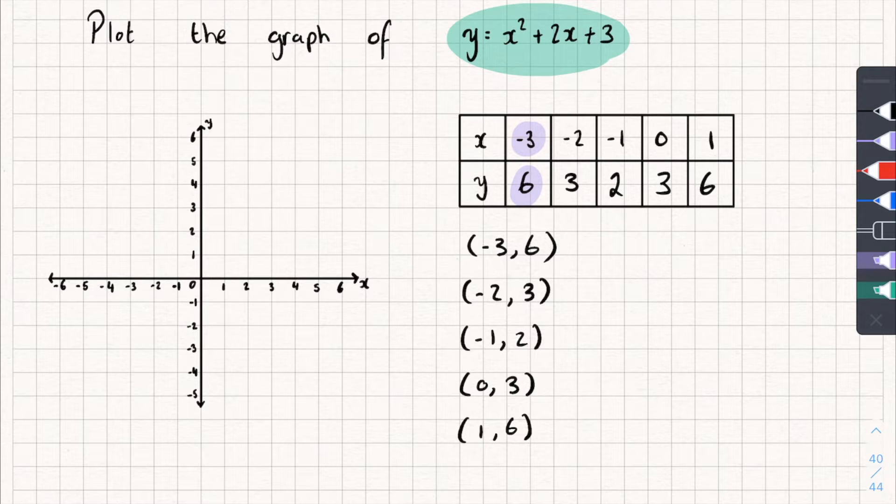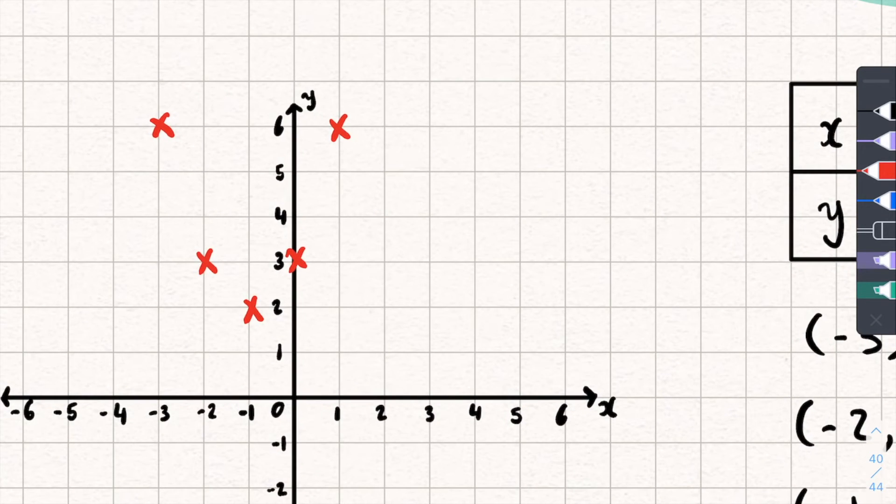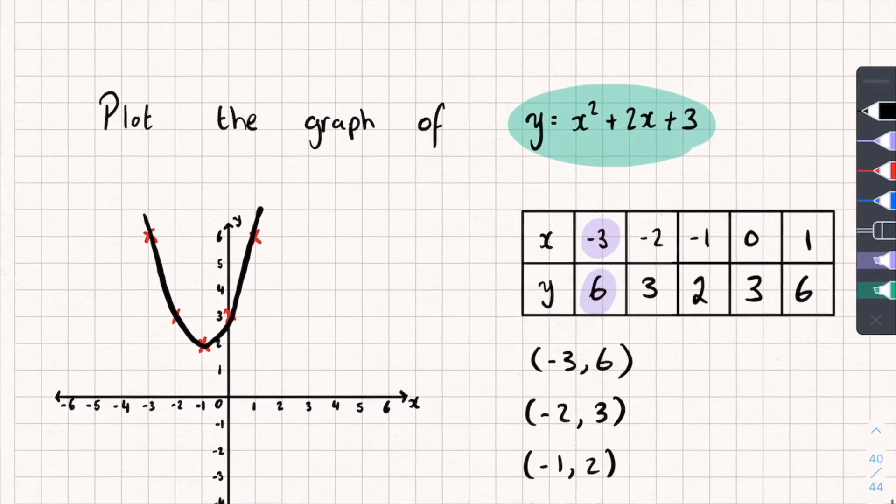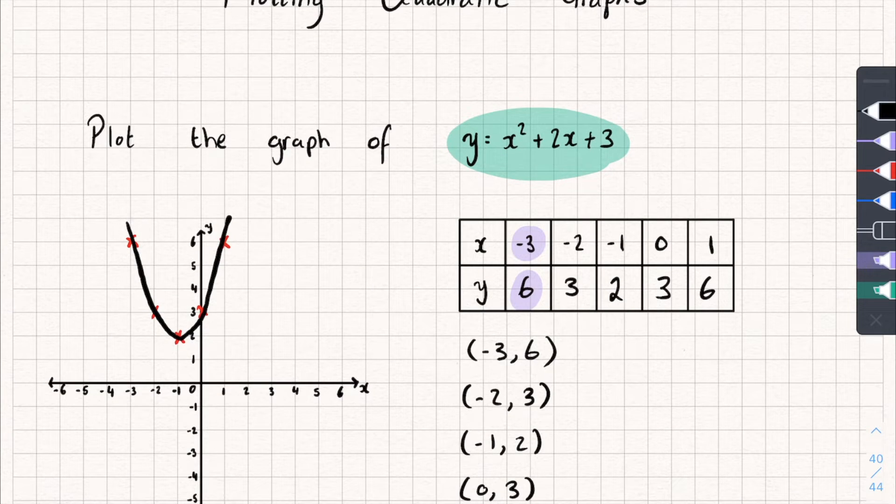So negative 3 and 6, that's going to be up here like that. Negative 2 and 3 is going to be there. Negative 1 and 2, 0 and 3, and 1 and 6. So let me zoom in. You can see I've plotted these points and you can kind of see the U shape. Here's how we actually plot the graph though, well we've plotted it, but here's how we draw it. What we need to do is have a continuous curve that goes through each one of these points. So it should look something like this. And you can see that resembles the shape of a quadratic. And that's it. We've plotted the graph.